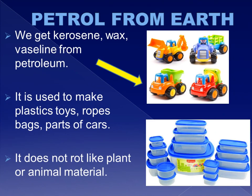We also get petroleum from deep inside the earth. We get petrol and diesel from it, which are used to run vehicles. We also get kerosene, wax, Vaseline, and other things from petroleum. Petroleum is also used to make plastics, which have become an important material alongside wood and metals.